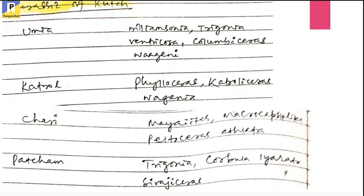The next important fossil-bearing horizon is the Jurassic of Kutch. Kutch is situated in Gujarat. There are four litho units defined here: Pacham Formation, Chari Formation, Katrol Formation, and Umia Formation. Pacham is the oldest and Umia is the youngest formation from bottom to top. The Umia Formation holds Williamsonia and different plant fossils — the other name for the Umia succession is also the Umia Plant Bed.